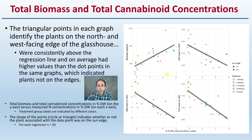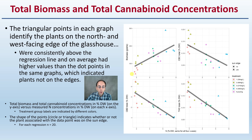Looking at the graphs here, note that the total biomass and total cannabinoid concentrations in percent dry weight are on the y-axis — the vertical axis — and this is versus the measured nitrogen concentrations in percent dry weight, which is on the x-axis.